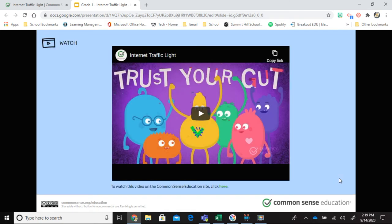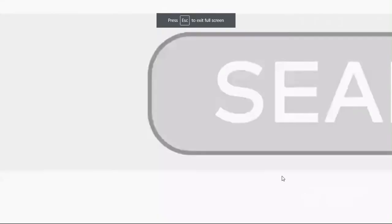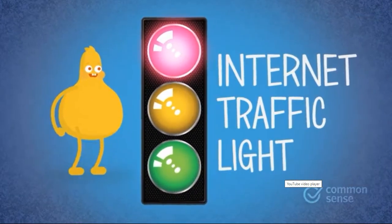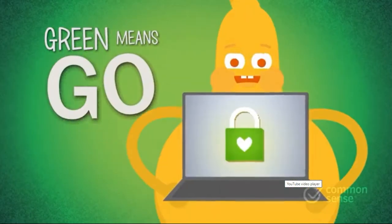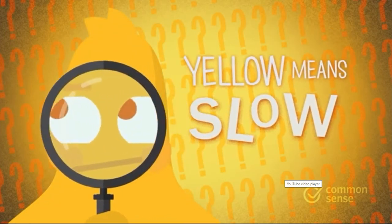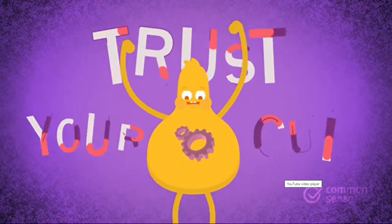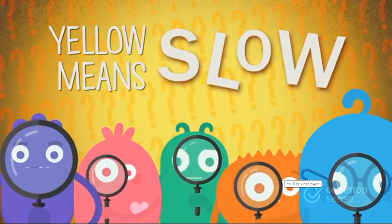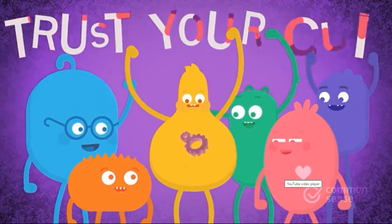We're going to listen to the poem one more time before we move on. We go online to find new things to do and see — the internet traffic light shows where we need to be. Green means go to sites we trust. Yellow means slow — being safe is a must. Red means stop, ask if it's okay. Trust your gut to go the right way.